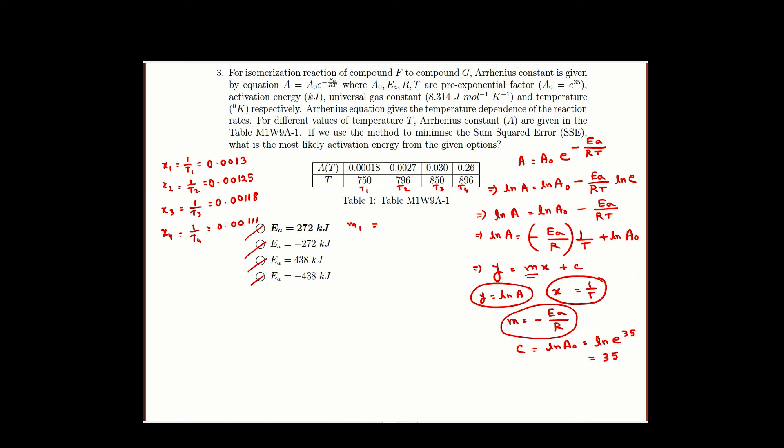If we calculate m1 which is minus Ea by R and I am taking the first Ea, first option 272 as my first Ea, I am getting minus 32716.